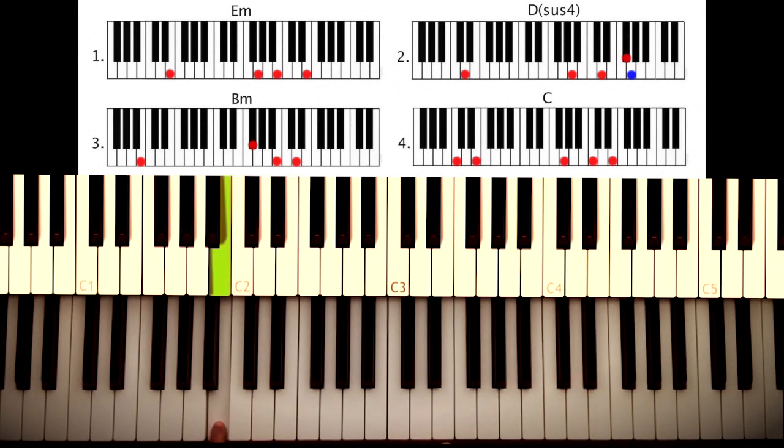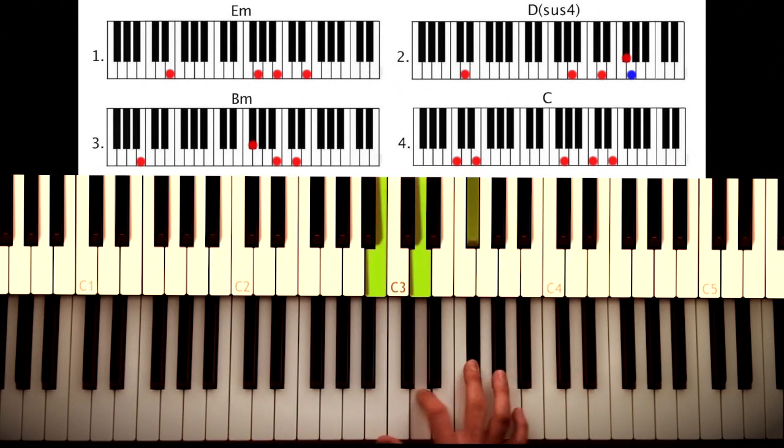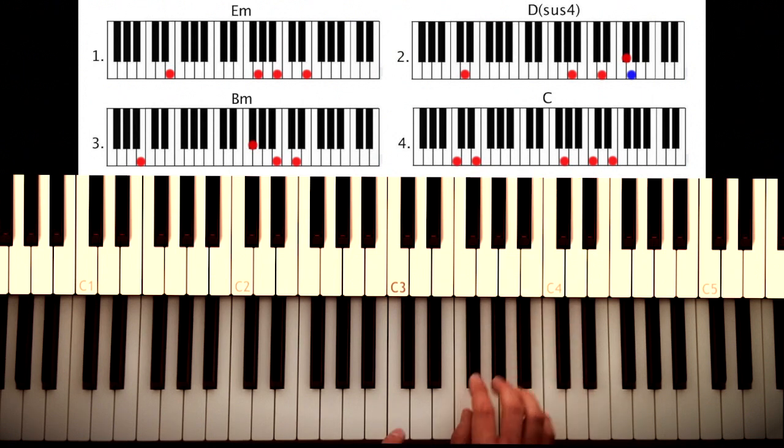Then we move on to the next chord, which is a B minor. Play it like this. So this is your regular B minor, inverted one time, and another time, and we have F sharp, B, D.